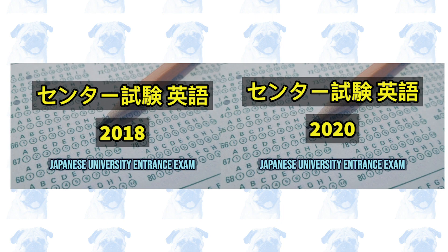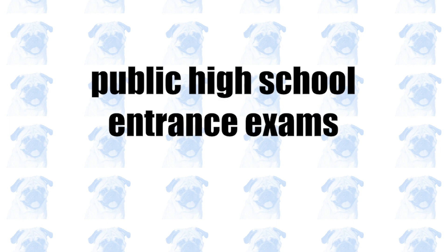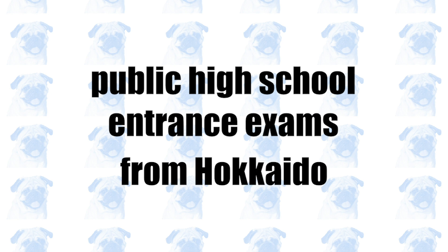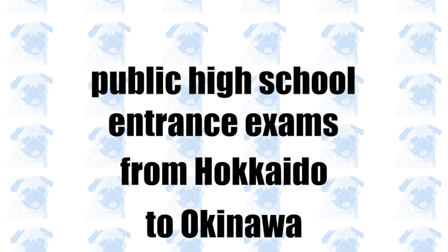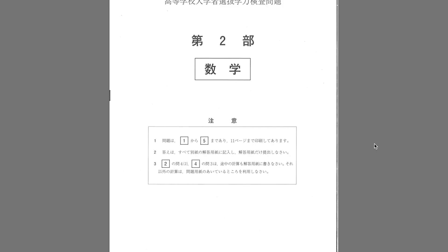I thought I could have a go at actual past exam papers. My initial idea was to simply solve university entrance exam questions like I have done before with the English equivalent, but I realized that might be a little too advanced and I should start with something simpler. So in this mini-series, I'm going to have a go at every single public high school entrance exam from 2020, starting from the northernmost prefecture — Hokkaido — all the way down to Okinawa. I'll leave a link to the PDF file in the description below.